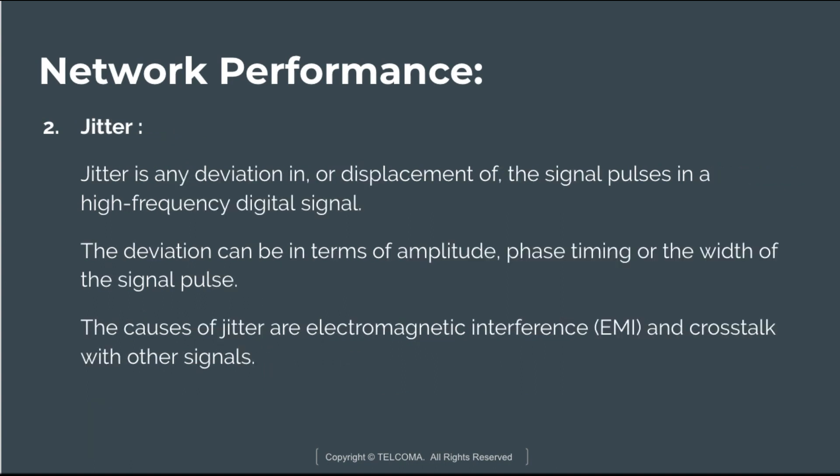Jitter is an abrupt deviation in, or displacement of, the signal pulses in a high-frequency digital signal. The deviation can be in terms of amplitude, phase, timing, or the width of the signal pulse. The causes of jitter are EMI, that is electromagnetic interference, and crosstalk with other signals.